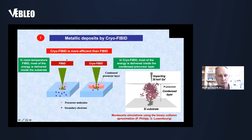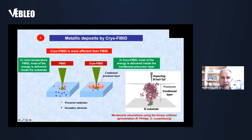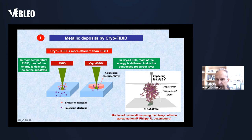Why is cryo-FIBID more efficient than standard FIBID? In standard focused ion beam induced deposition, the precursor forms just a monolayer on the substrate surface, so most of the ion beam energy is delivered into the substrate rather than decomposing precursor molecules. In cryo-FIBID, with a condensed precursor layer, all the energy of the focused ion beam is used to decompose the precursor material. This gives an efficiency several hundred times greater than standard FIBID. Monte Carlo simulations of a 30 keV gallium ion impacting a platinum precursor layer show many scattering processes occurring within the condensed layer, with energy used to dissociate the precursor.